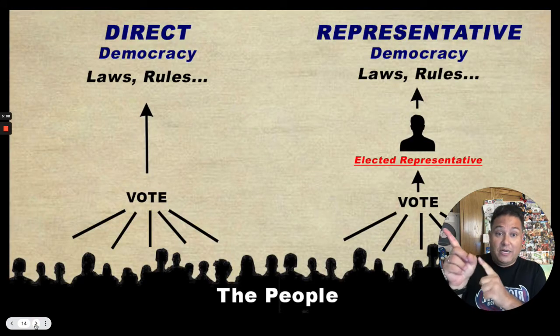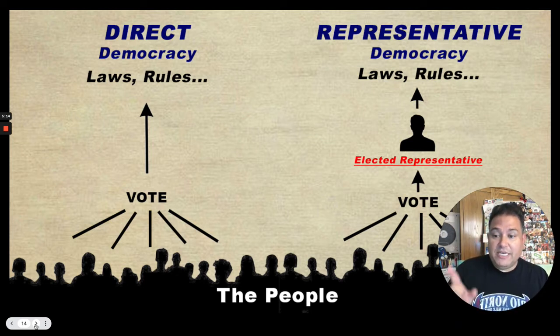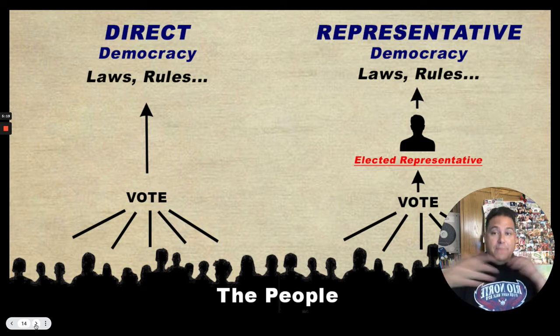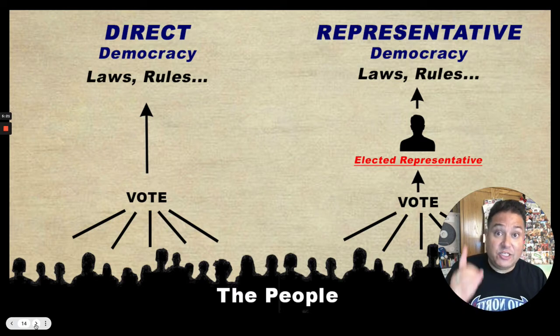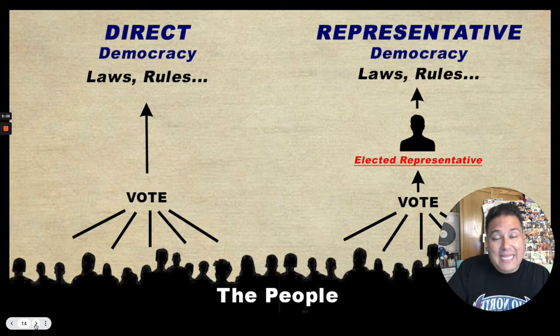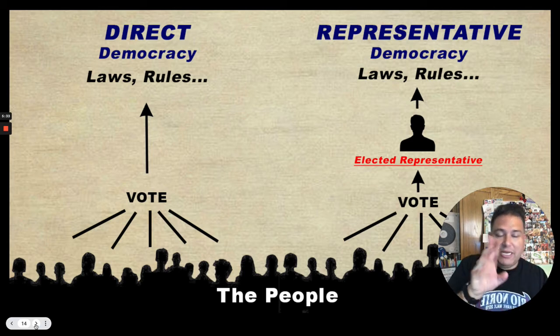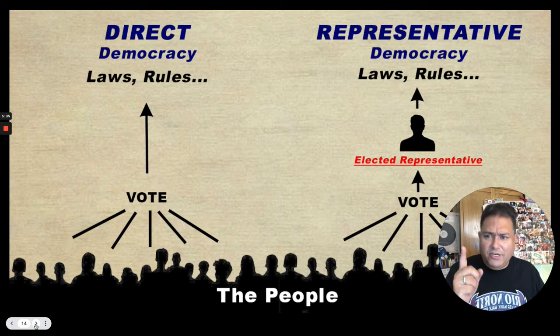Direct democracy — I'm going to teach you a little bit about this because we haven't learned about it yet. This is the difference between direct democracy and representative democracy, or representative government, or republic. A direct democracy is when the people vote directly on a law and then it becomes the law of the land. We got that from ancient Greece, and in America we still do that today, kind of at the state level, not at the federal level.